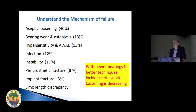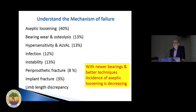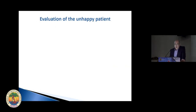When you have an unhappy patient post total hip replacement, you need to first try and understand the mechanism of failure. Aseptic loosening is the commonest cause of failure in the National Joint Registry of the UK, though that incidence is coming down because of better bearing surfaces and better techniques. In the US it's already third, after infection and dislocation.